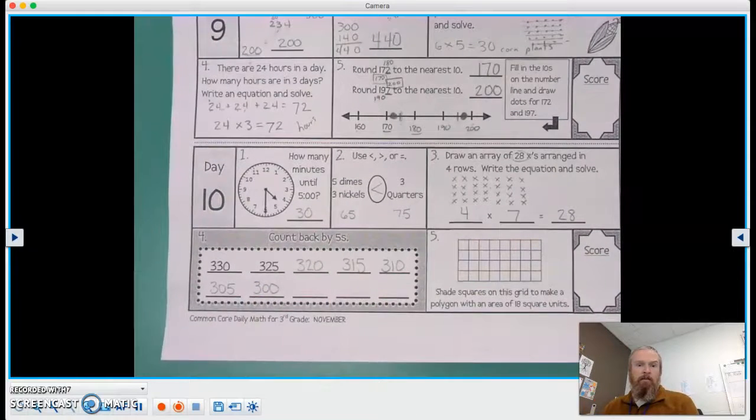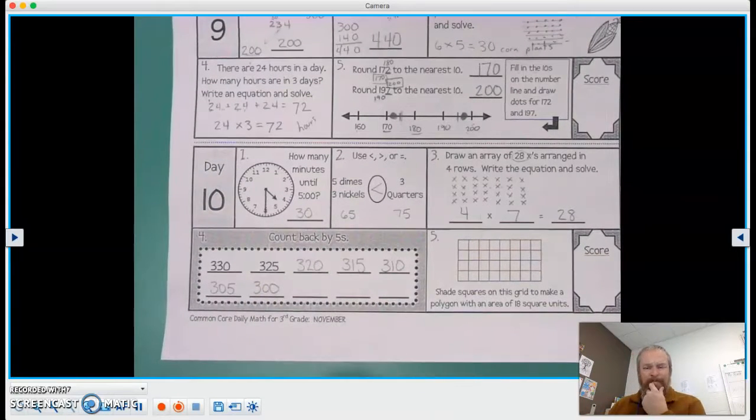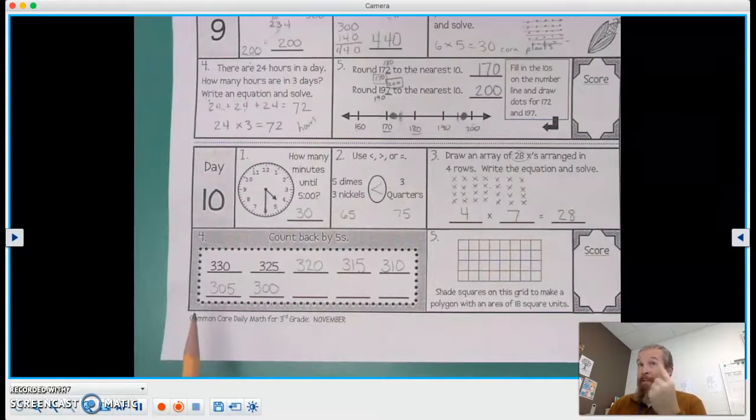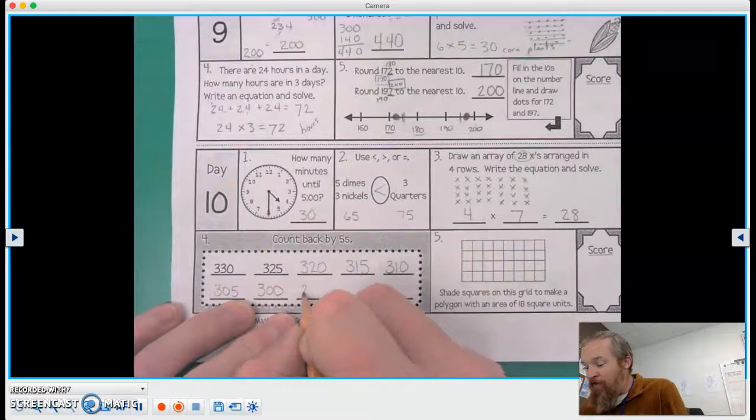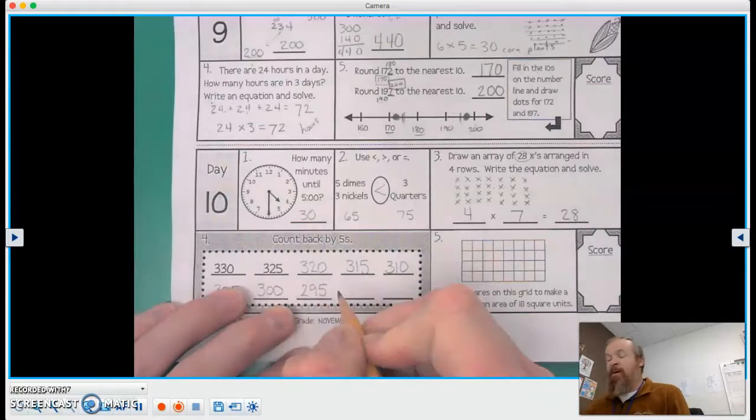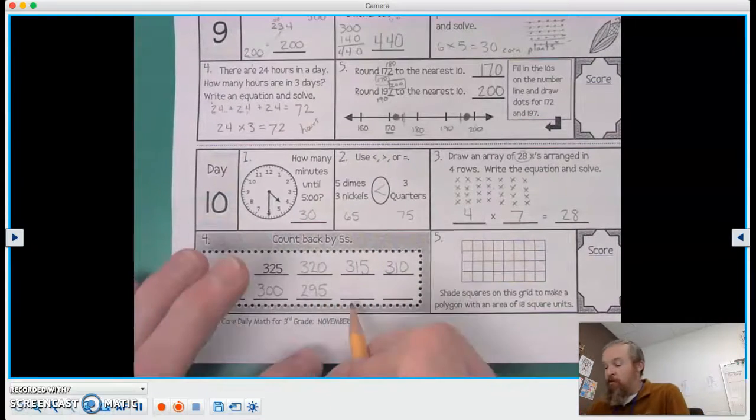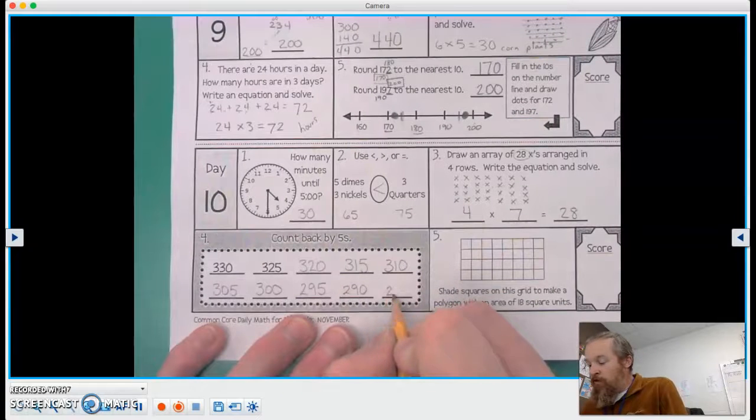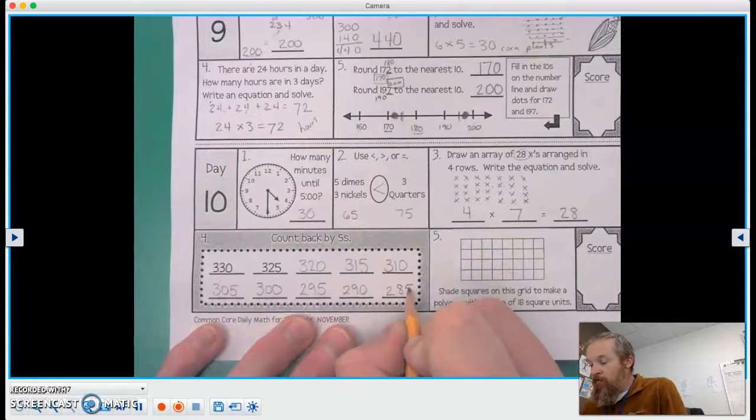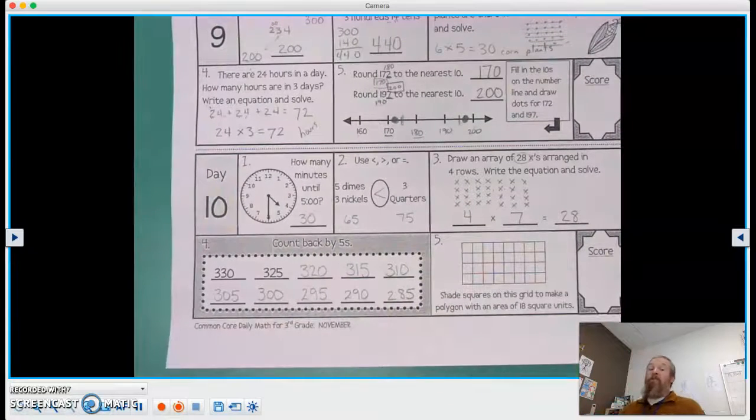Now what? Well, 299, 98, 97, 96, 95, 295. Good job. 5 more, 290. And 5 more, 285. That was a tricky one, wasn't it?